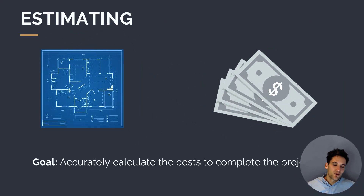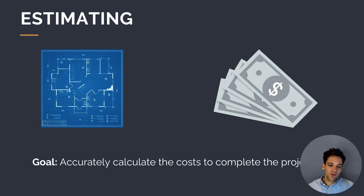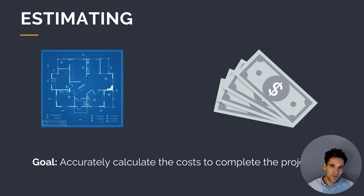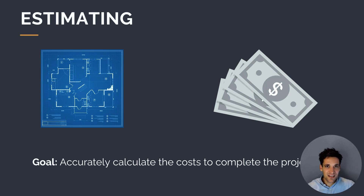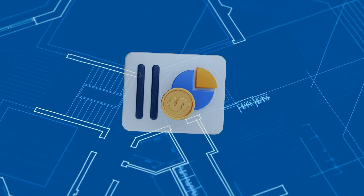Let's look at the first component of the construction cost management process: estimating costs. The goal of estimating is to accurately calculate the costs of completing construction work. We take a set of drawings, project specifications, and requirements, and we need to turn these into a dollar value — all the different resources we need to complete the works as defined in the project requirements.